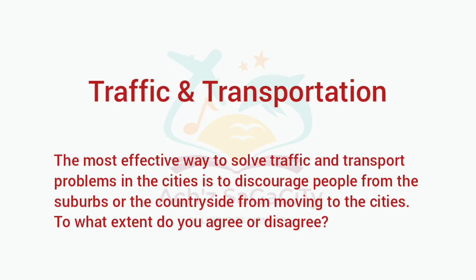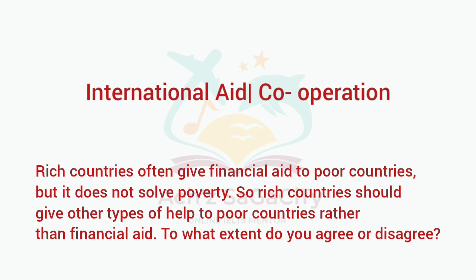Next topic: Traffic and Transportation. The most effective way to solve traffic and transport problems in cities is to discourage people from the suburbs or countryside from moving to cities. To what extent do you agree or disagree? This is the to-what-extent format.